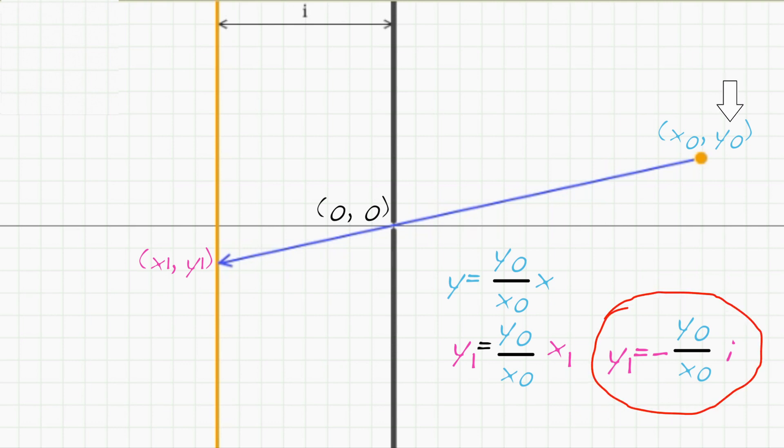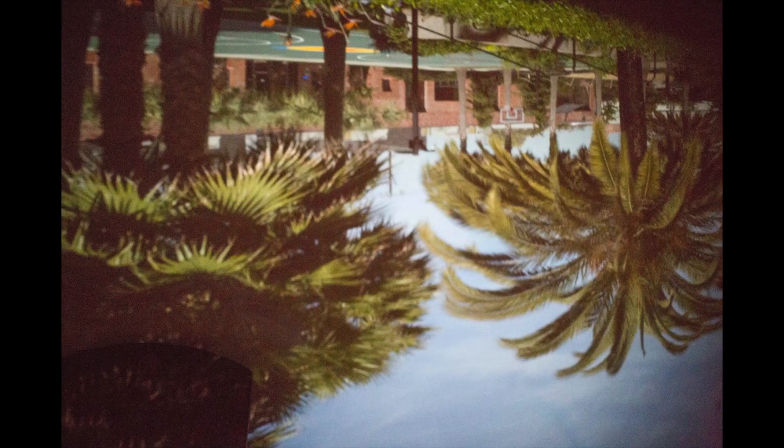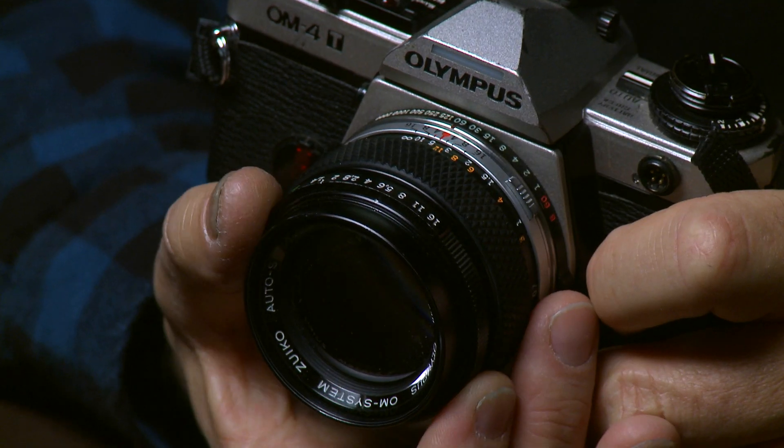Notice that the point Y0 was originally positive, but the corresponding point on the plane is negative, and that's the image flip. Okay, let's pause here to give you some experience with this before we add a lens to our camera.